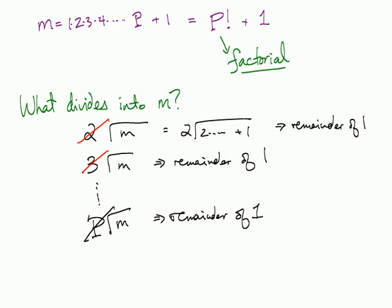Again, p divides into p factorial, and when I divide into it, I end up with a remainder of 1. So, what does this mean? This mean, if anything divides into m, it has to be greater than p, other than 1.